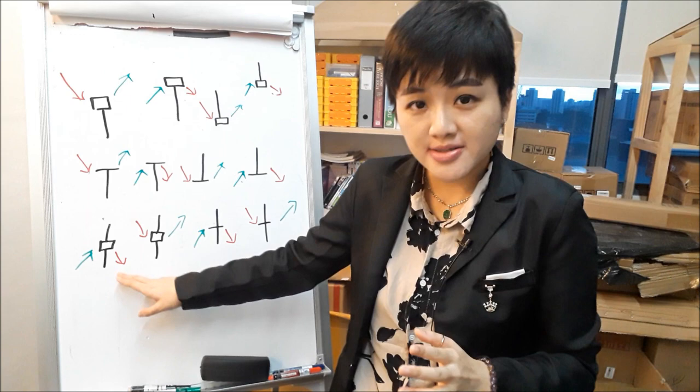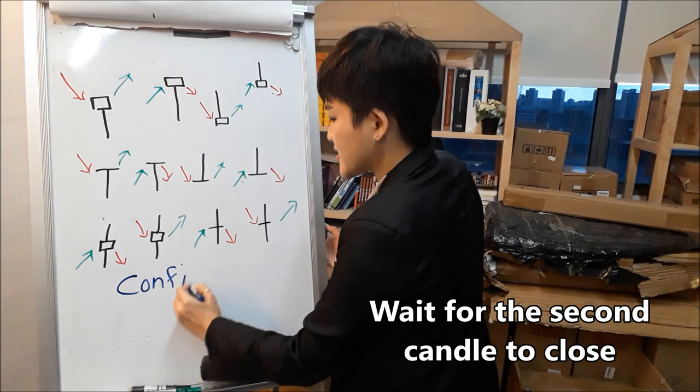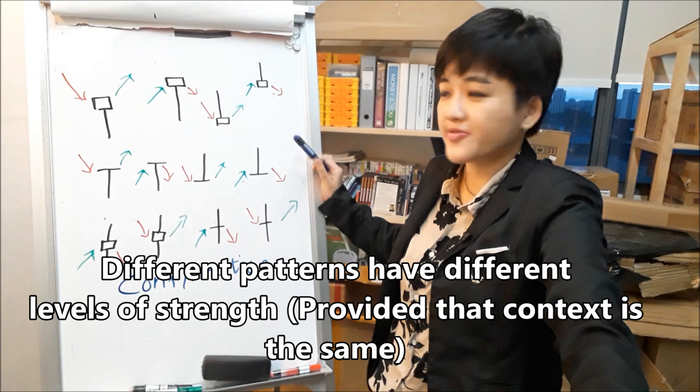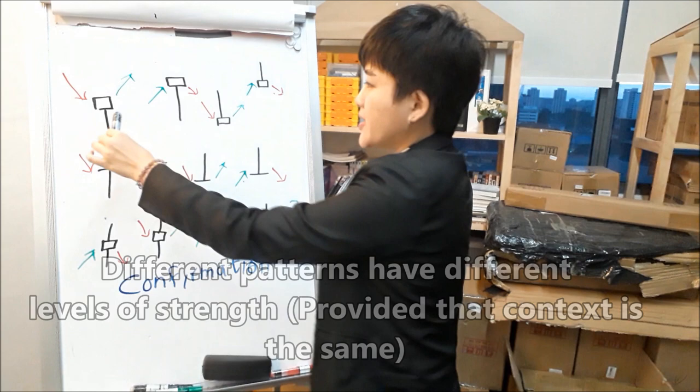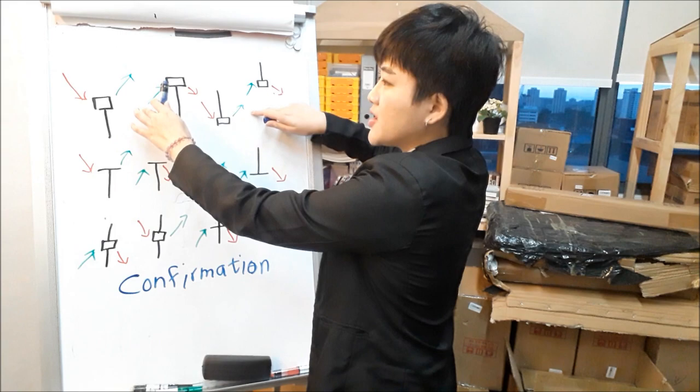So the moment a bearish candlestick signal forms after this spinning top, it tells you that sellers took over and made their decisions to push the price down. Remember to wait for the second candle and use it as a confirmation. Also understand that different patterns have different strengths. Let's say all of these contexts are the same — which one is a stronger bullish signal?